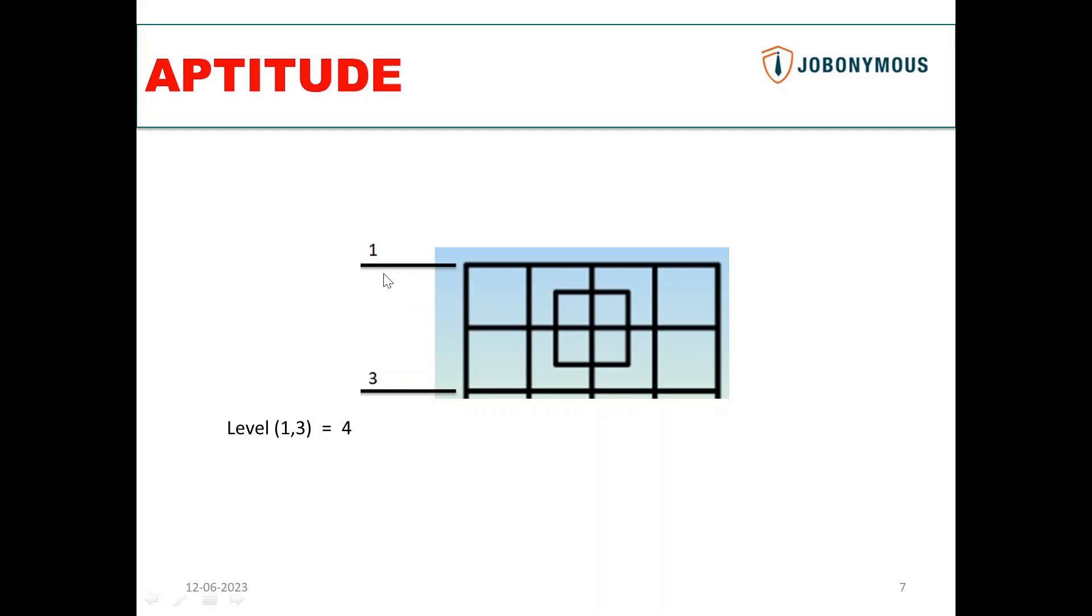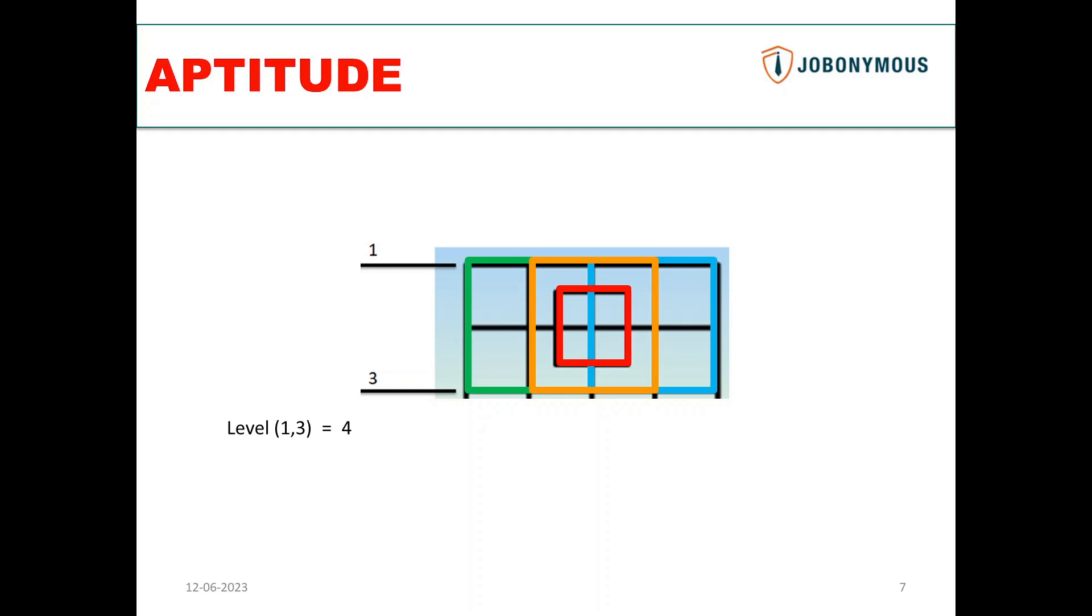Level one-three means the square that starts from level one and ends at level three. So how many squares are there? One, two, three, and this in between four - one square is there. So you write the number of squares as four. Then between two and four: one, two, three.